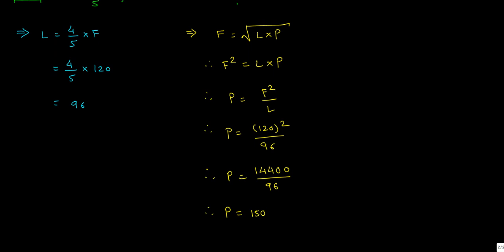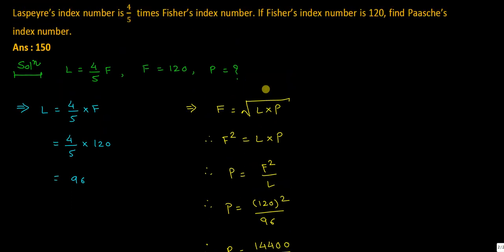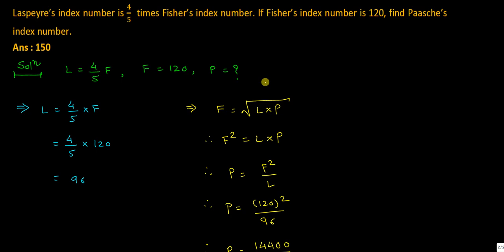So I hope the short sums on Laspeyres, Paasche, and Fischer are now clear to you. These index number sums can all be solved once you have the basic foundation. We will meet in the next video with short sums of the cost of living index number.